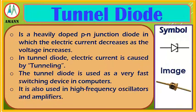Tunnel diode: in a heavily doped P-N junction diode, the electric current decreases as the voltage increases. In a tunnel diode, electric current is caused by tunneling. The tunnel diode is used as a very fast switching device in computers, and is also used in high-frequency oscillators and amplifiers.